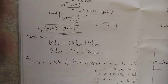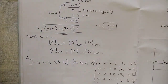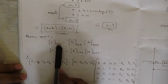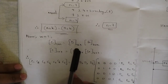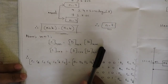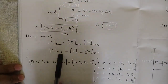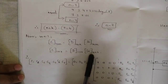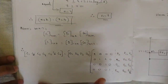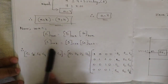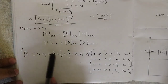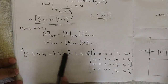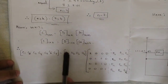Now that we have n=7, for a linear block code the code word is given by: C (1×7) = D (1×4) × G (4×7). This expands to: c1 c2 c3 c4 c5 c6 c7 = d1 d2 d3 d4 multiplied by the generator matrix of order 4×7.